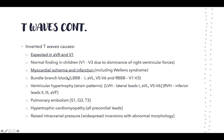Inverted T waves can also be associated with bundle branch blocks, ventricular hypertrophies, and pulmonary embolism. In pulmonary embolism, a characteristic pattern is S1Q3T3 — an S wave in lead 1, a Q wave in lead 3, and an inverted T wave in lead 3. Hypertrophic cardiomyopathy may show inversion across all precordial leads, and raised intracranial pressure can cause widespread inversion.